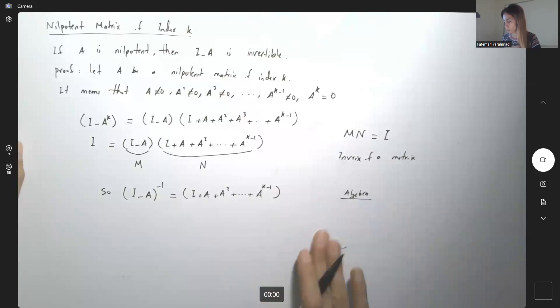But eventually, if you have, for example, 1 minus X to power K, you can write this as 1 minus X times 1 plus X plus X squared plus X to the third plus X to power K minus 1.